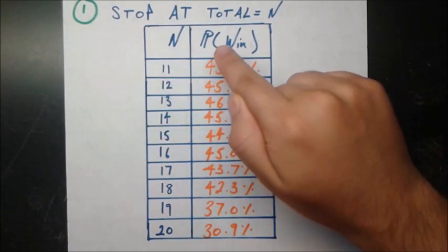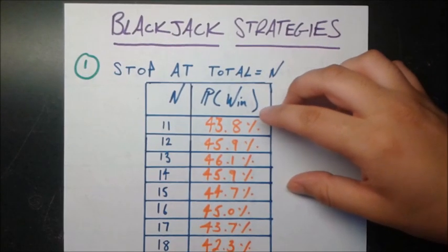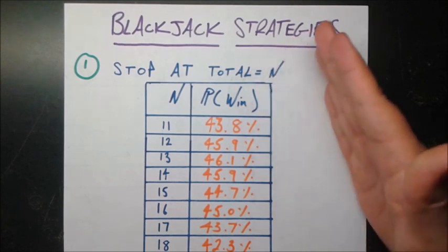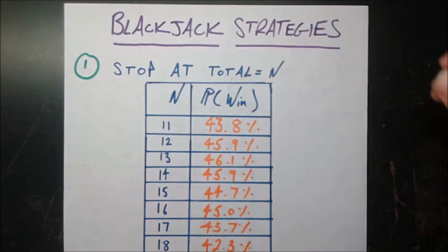This probability of winning is weighted, which simply means that it takes into account the fact that if you get blackjack on the first two cards you have, which means you get an ace and a 10 card, like a king, queen, jack, or 10, then you're going to get three to two payout.